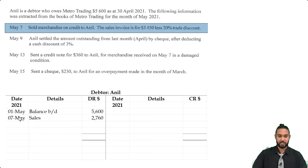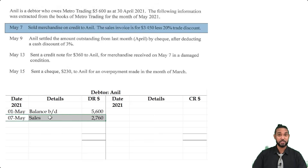That 2,760 will say 'Sales' because the other account affected by this transaction is the sales account.